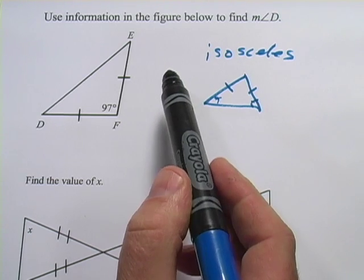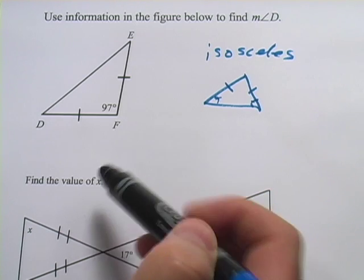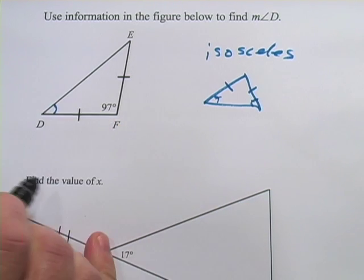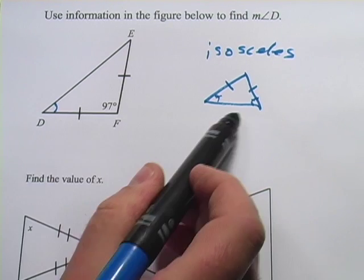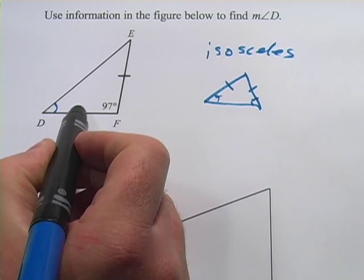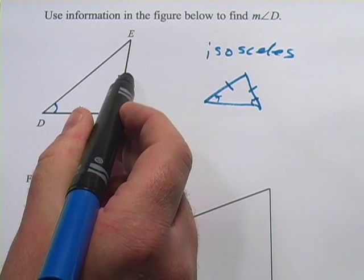The first one here says use the information in the figure below to find the measure of angle D. So we want to find this angle right here. And what we've got is an isosceles triangle. It's kind of turned on its side from the first one I showed you. Here is a congruent side and here is a congruent side.